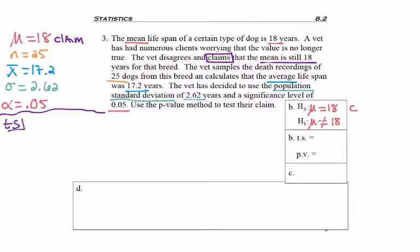I'm ready to find my test statistic. Because I'm testing a mean and I have a known population standard deviation, I'll use the formula Z equals X bar, et cetera. So I'll be using the Z table.